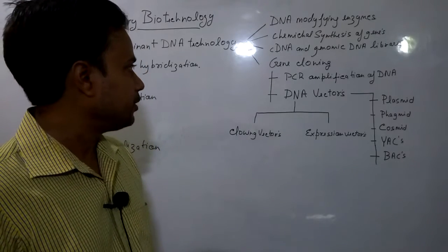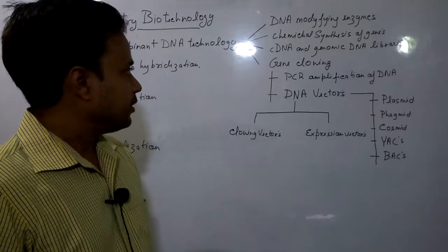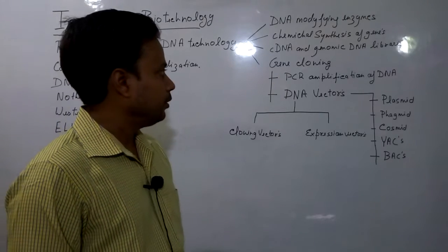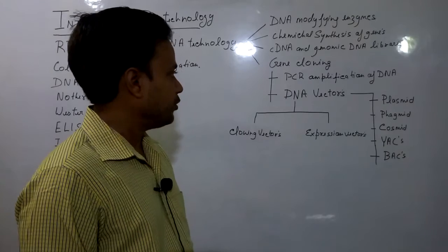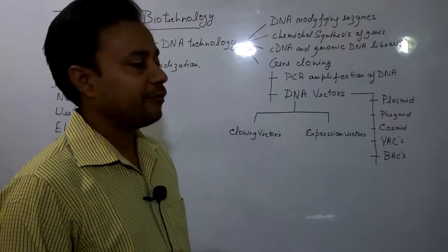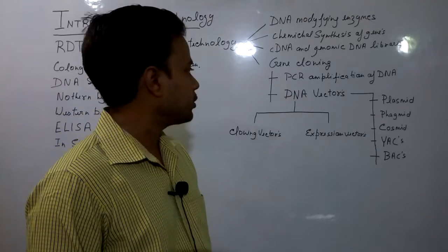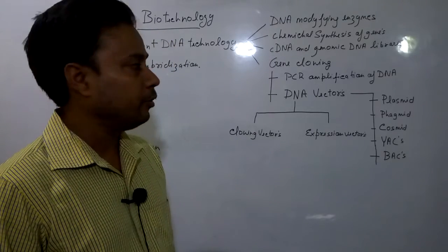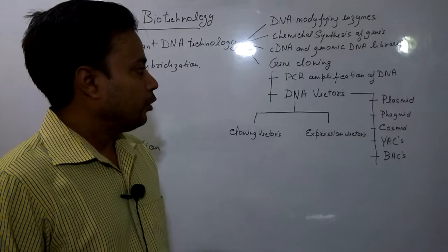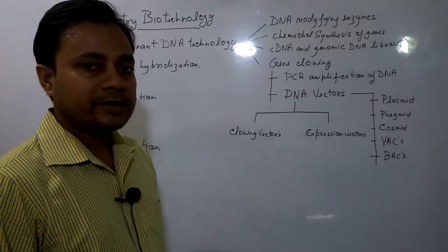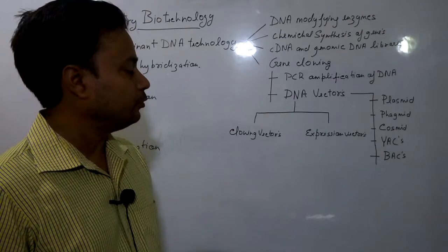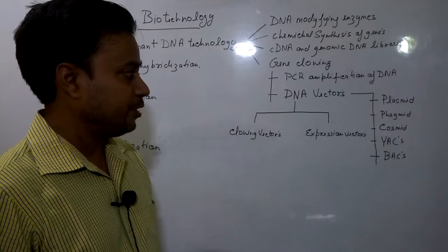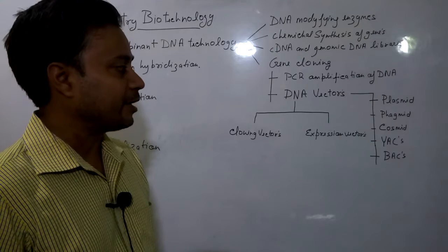Next is gene cloning, which is an important part of the subject and includes PCR amplification of DNA fragments from template DNA molecules. The next is DNA vectors, used for the cloning of DNA molecules. On the basis of their origin, these vectors can be subdivided into classes like plasmids, lambda, cosmids, YACs, and BACs.